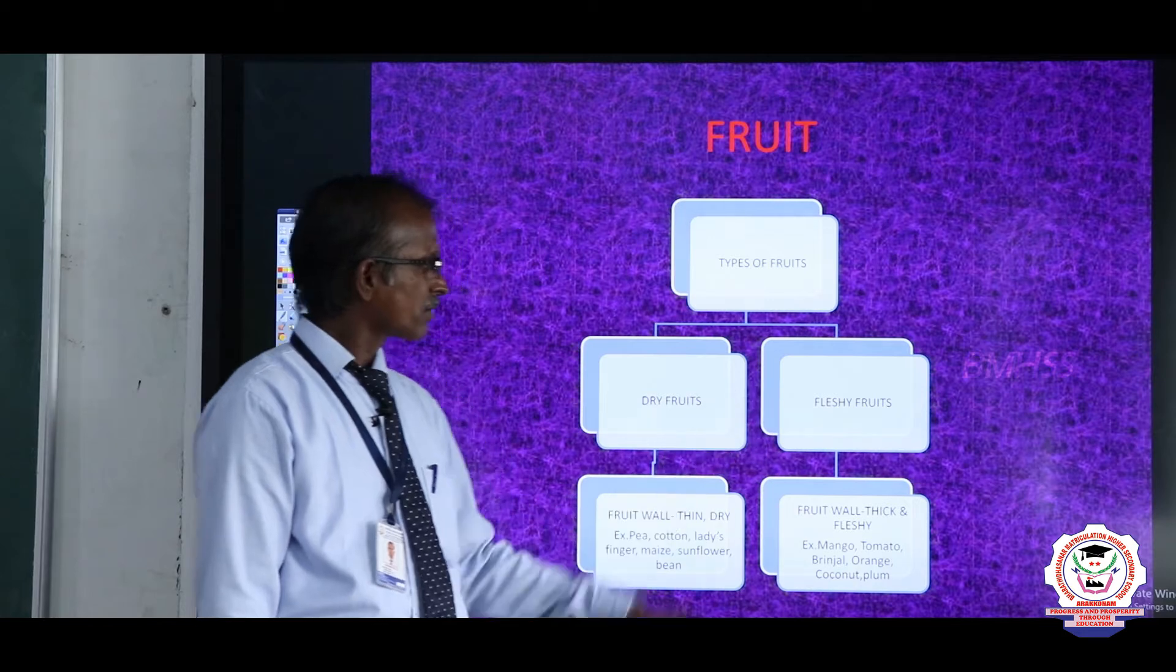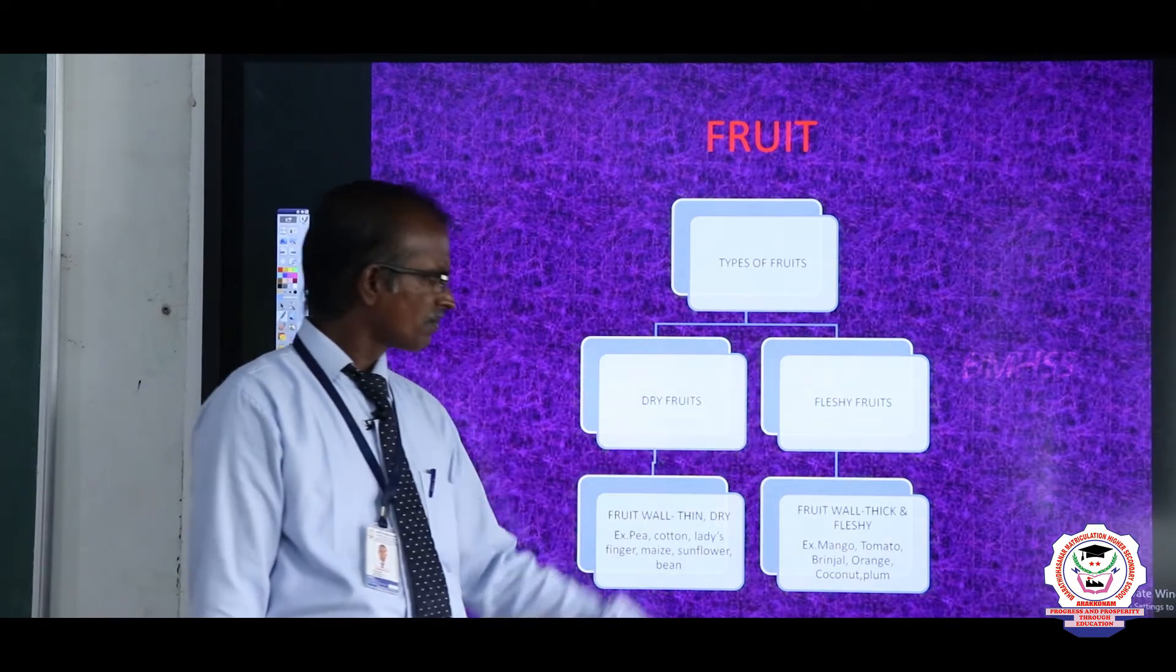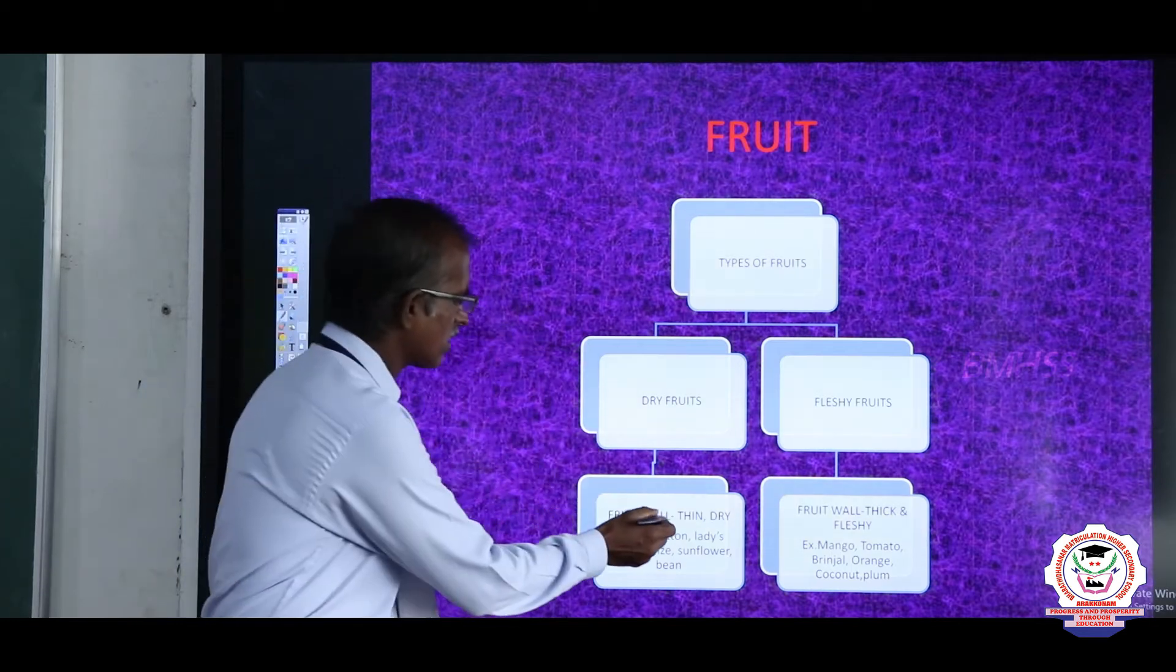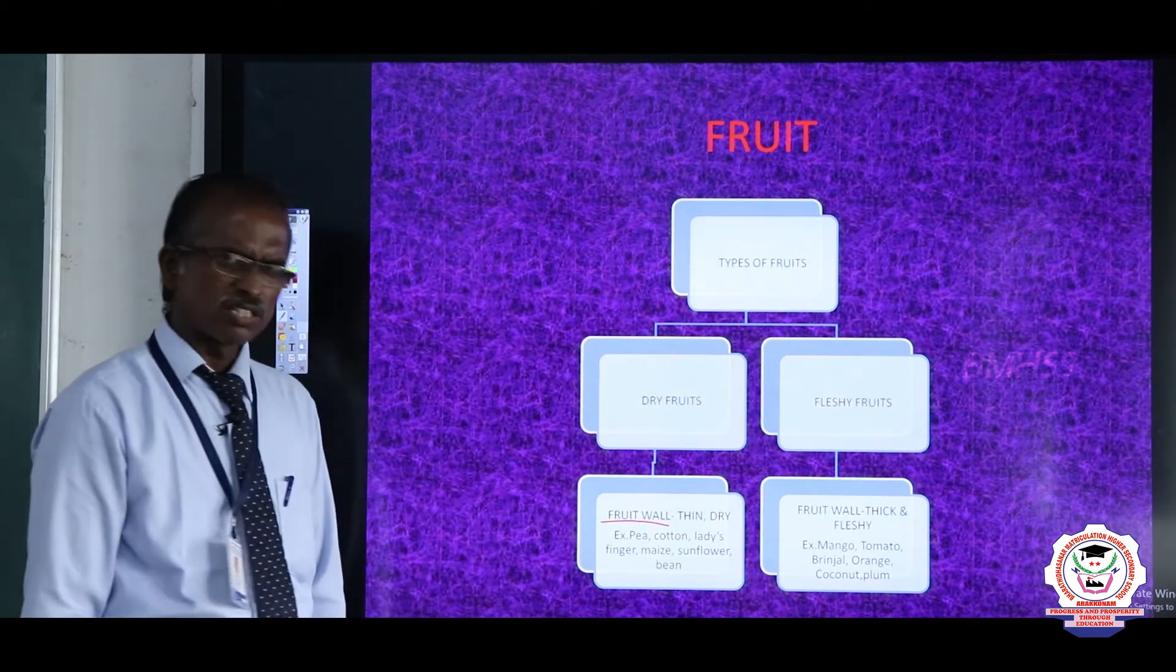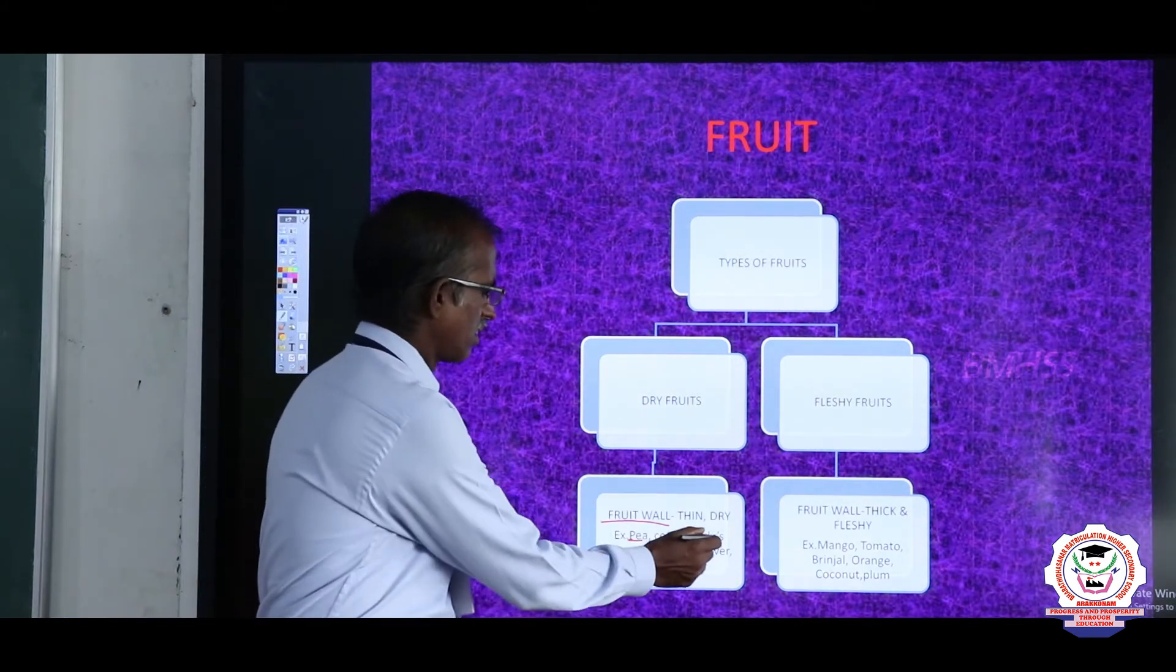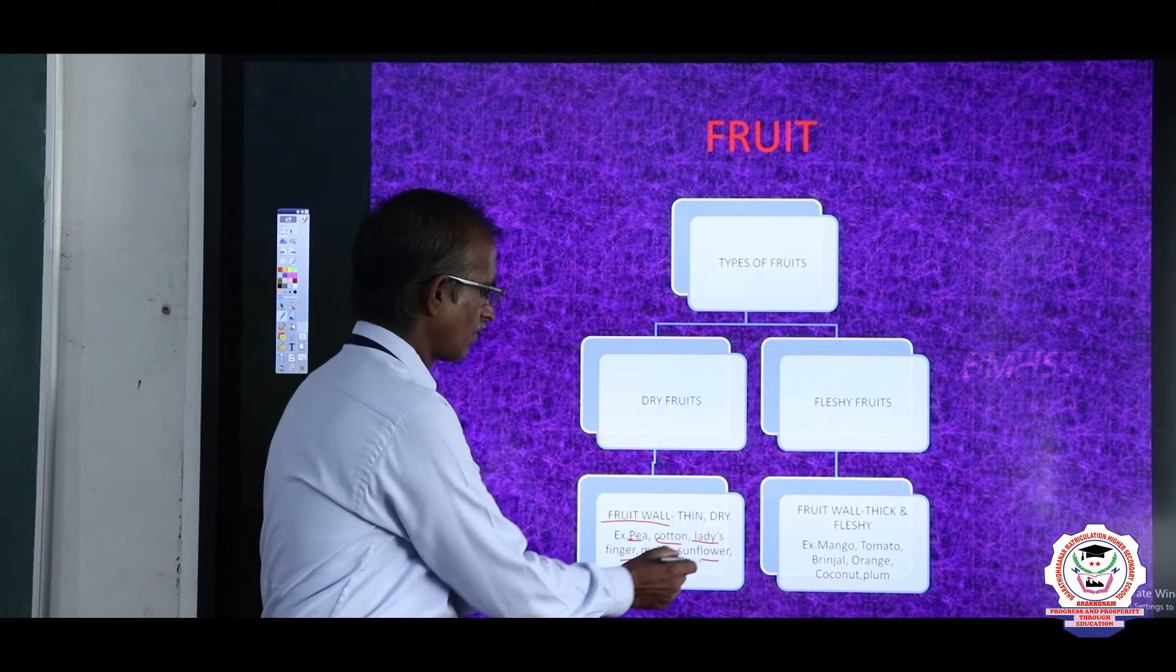There are two types of fruit: dry fruit and fleshy fruit. In dry fruit, the fruit wall is always thin and dry in nature. Examples: pea, cotton, lady's finger, maize, sunflower, bean.